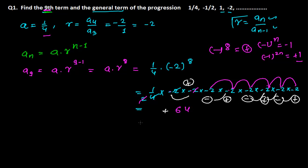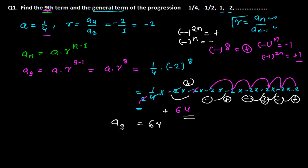Simply put: if minus has an even exponent the result is positive, and if minus has an odd exponent the result is negative. Here, minus has the power 8, which is even, so it's positive. Our ninth term is 64.